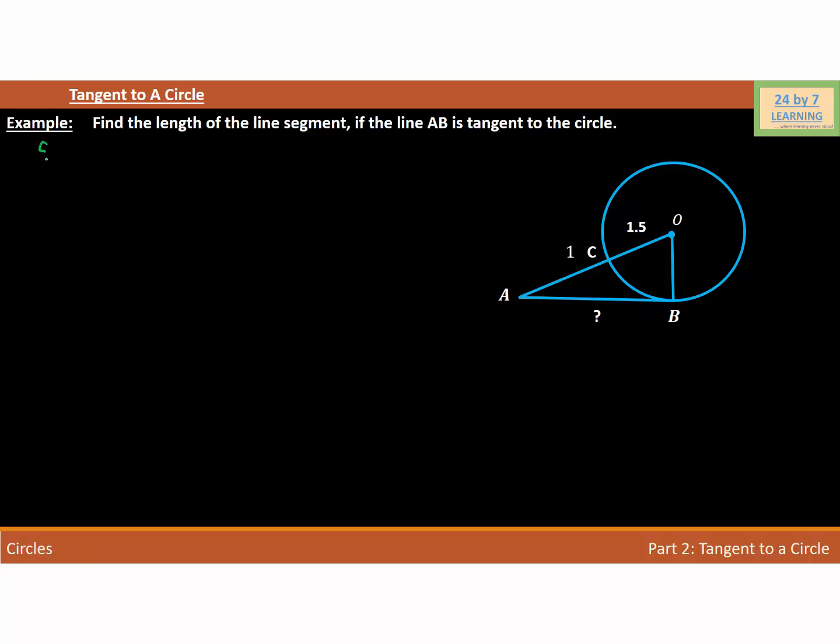As you can see, it is given that we have a circle with center O and AB is the tangent to the circle with center O. So if AB is tangent to the circle, then angle B will be 90 degrees.